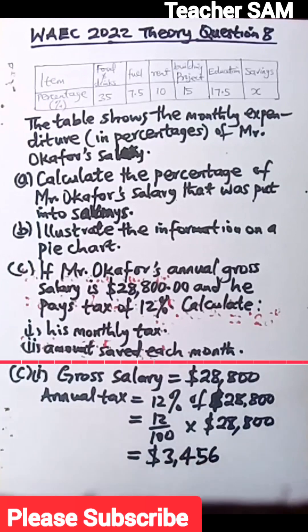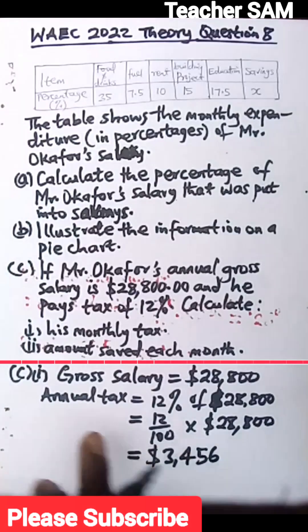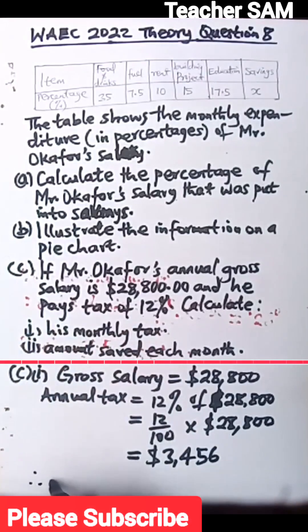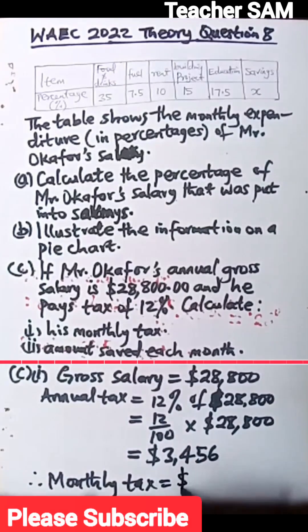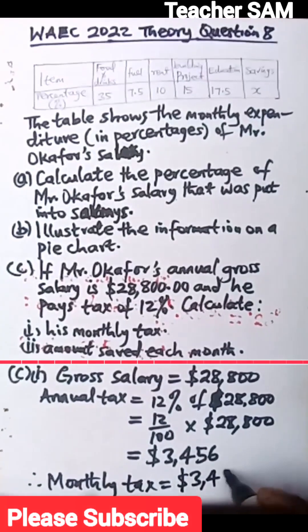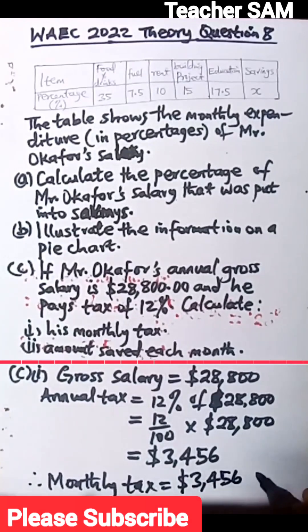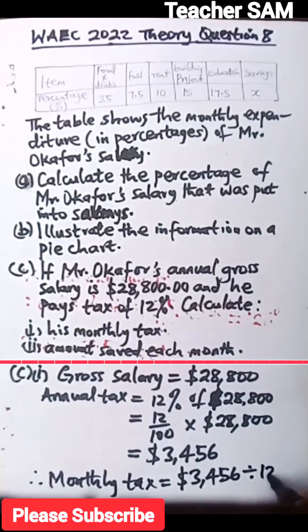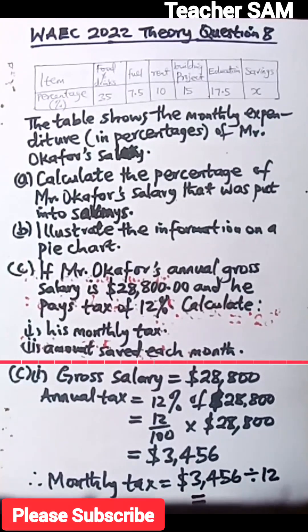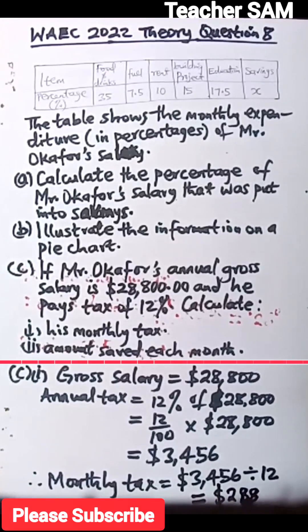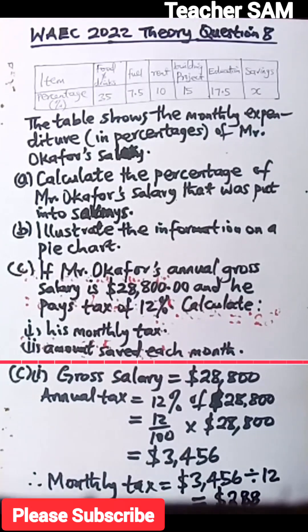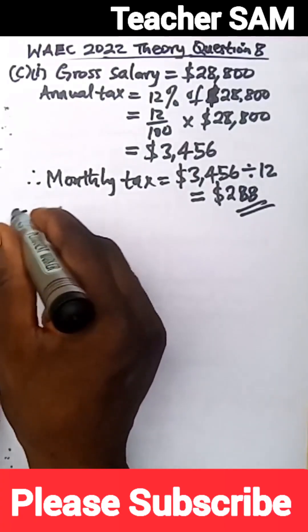We are asked for monthly tax. Monthly tax = annual tax ÷ 12 months = $3,456 ÷ 12 = $288. So Mr. Okafor pays $288 per month as tax.